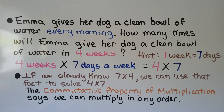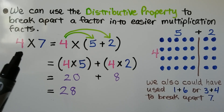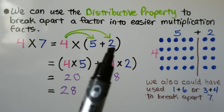If we already know 7 times 4, we can use that fact to solve 4 times 7. The commutative property of multiplication says we can multiply in any order. We can also use the distributive property to break apart a factor into easier multiplication facts. If we don't know 4 times 7, we can break the 7 into a 5 plus a 2.